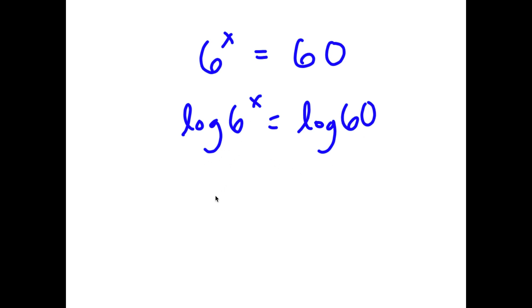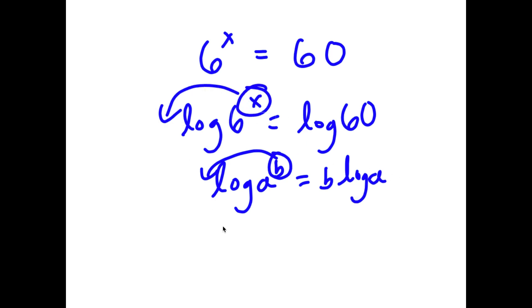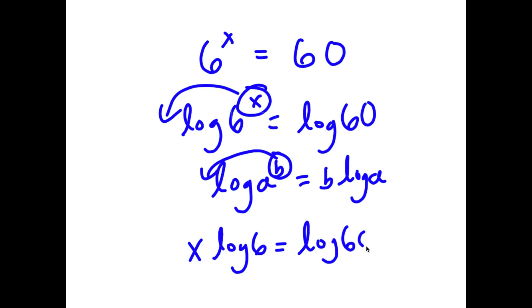Now, if I have something in the form log a to the power of b, I can move this exponent b to the front. So this is going to equal b times log a. In this case, I have log 6 to the power of x, and I can move x to the front. So now I have x times log 6 is equal to log 60.